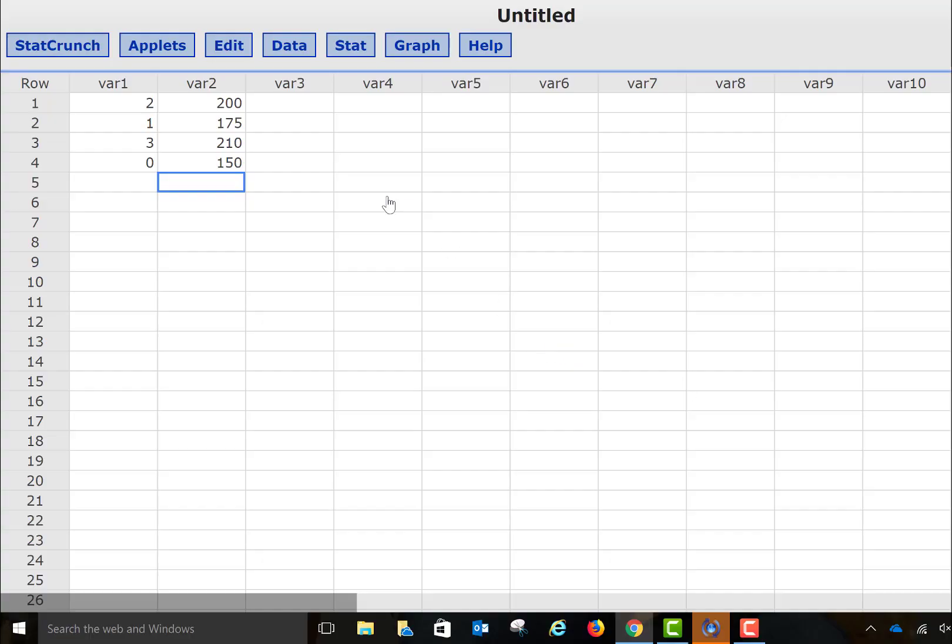So as you can see, doing the computation for correlation by hand can take some time, and there's actually a lot of room for errors in there if you're not very careful. Well, we can have a program like StatCrunch do that computation for us rather quickly.